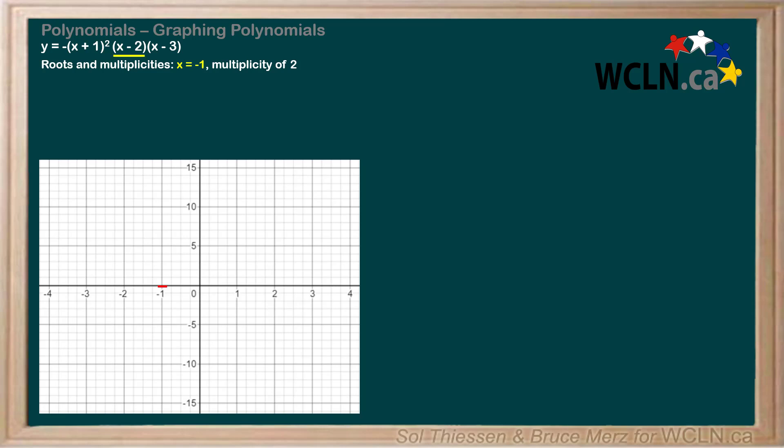Next, the factor x minus 2 gives the root x equals 2 and appears once, so this root has a multiplicity of 1. Since 1 is odd, we expect the graph to cross through the axis at x equals 2. Let's draw a vertical tick at x equals 2 on the x-axis to help us remember the graph will cross through the axis at this point.